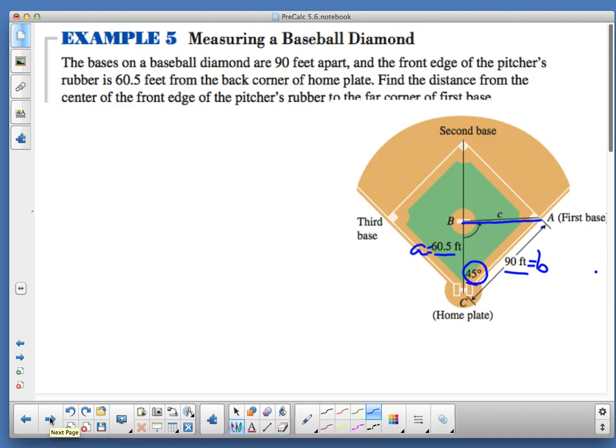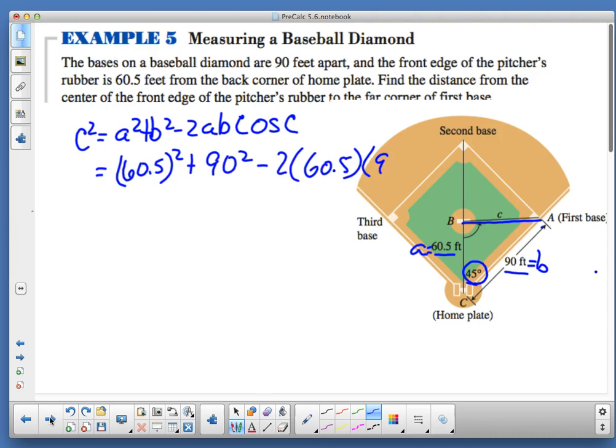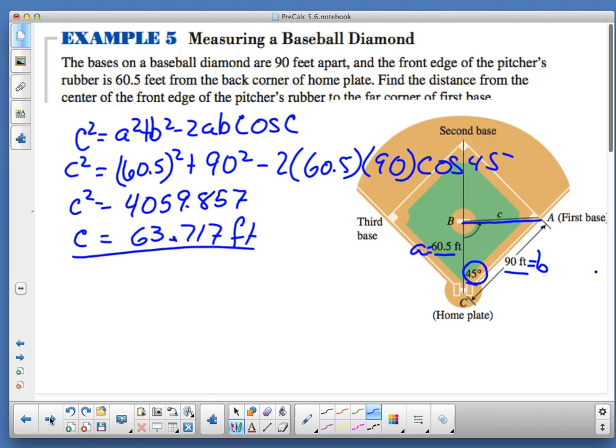With the information provided, we are going to find C right here, because we know that the cosine of 45 is right here. We're going to use that as cosine of 45. I've got c squared equal a squared plus b squared minus 2ab cosine of c. I've got 60.5 squared, 90 squared, minus 2 times 60.5 times 90 cosine of 45. That's the information I'm popping in my calculator. C squared is 4059.857, and I take the square root, and it's 63.717 feet. That's the distance from the center of the front edge of the pitcher's rubber to the far corner of first base, and we are done with problem five.